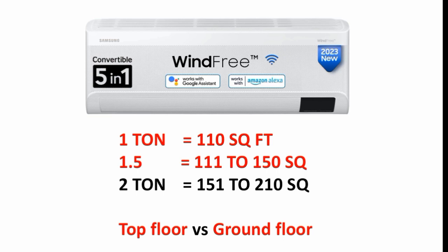For a ground floor room of 100 square feet, a 1-ton AC is sufficient. But for the top floor, the heat load is the same or higher — the capacity requirement is the same. So if you have a top floor room, even a similar size, you should choose a 1.5-ton AC. For the second floor as well, 1.5-ton is usable. That covers the star rating context.